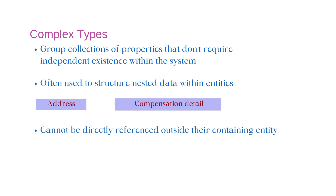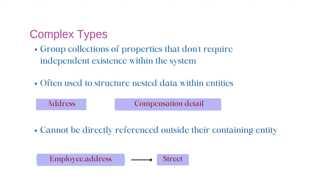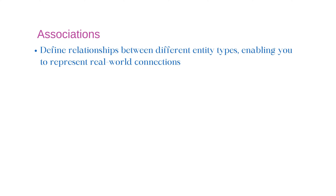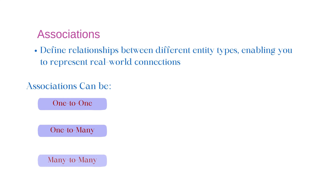Complex types cannot be directly referenced outside their containing entity. For example, we have employee.address — we cannot reference address without the employee entity. This address might contain street, city, state, and postal code properties. The fourth data model object is Associations. We use associations to define relationships between different entity types. Associations enable us to represent real-world connections. An association can be one-to-one, one-to-many, or many-to-many.